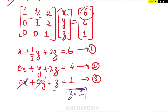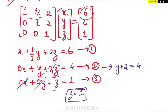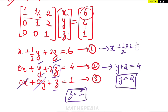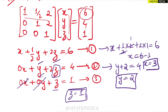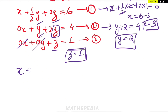Substituting z = 1 into the second equation: y + 2×1 = 4, so y = 4 − 2 = 2. Substituting y = 2 and z = 1 into the first equation: x + (1/2)×2 + 2×1 = 6, so x + 1 + 2 = 6, giving x = 6 − 3 = 3. The final solution is x = 3, y = 2, z = 1.